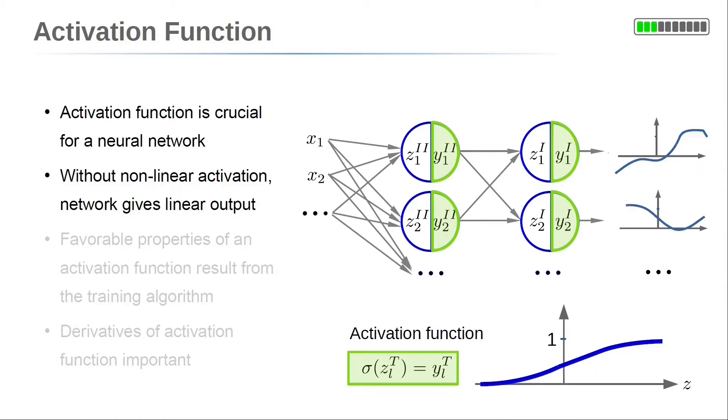There are several common activation functions to incorporate nonlinearity into a neural network. Some of them might be preferred over others due to their properties.